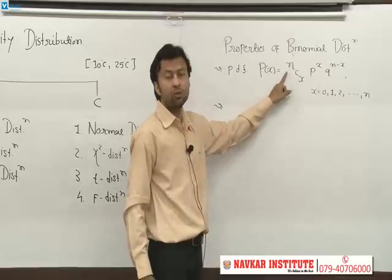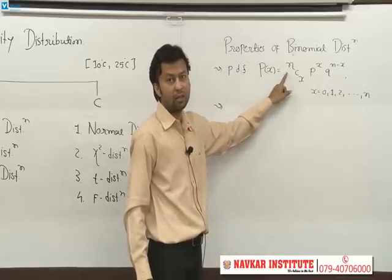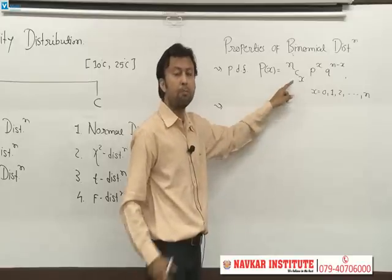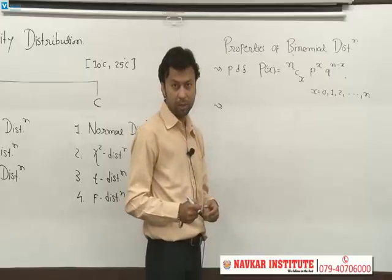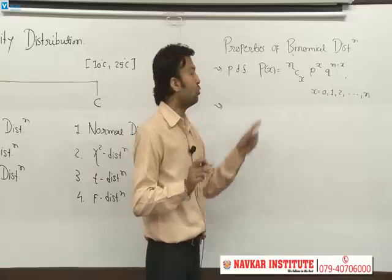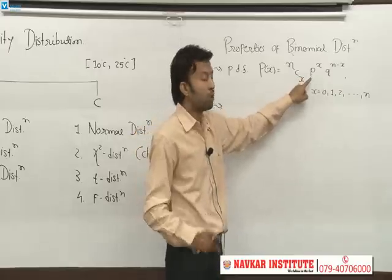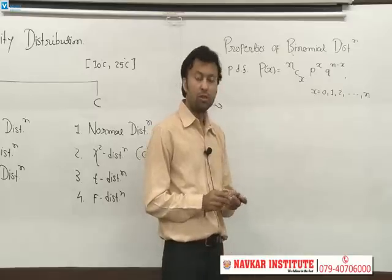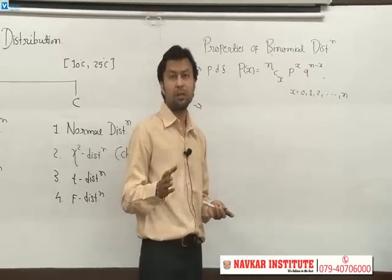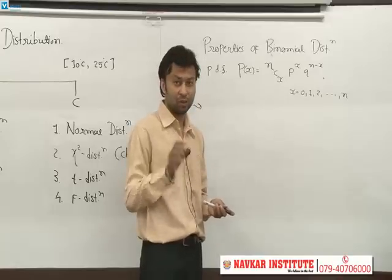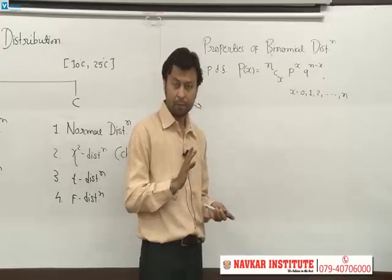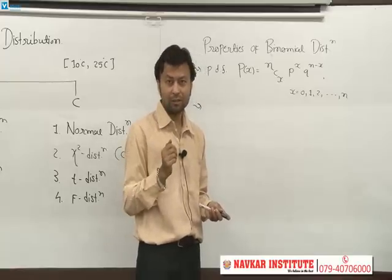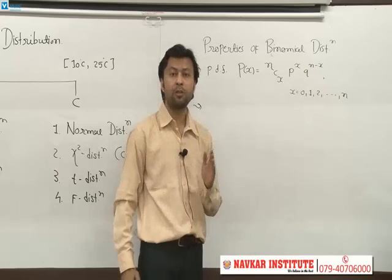Here N means the total number of trials, X means the number of successes. For example, in 5 trials you get 3 successes — we use binomial distribution to find that probability. P means probability of success — what we are looking for is considered success. Q means probability of failure.